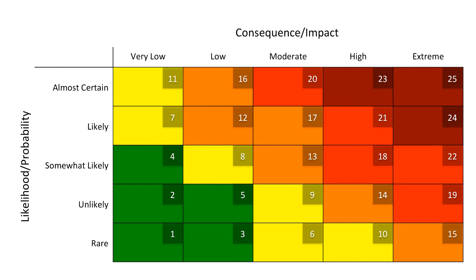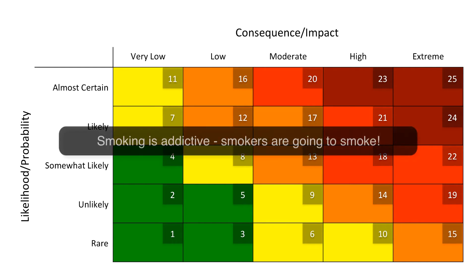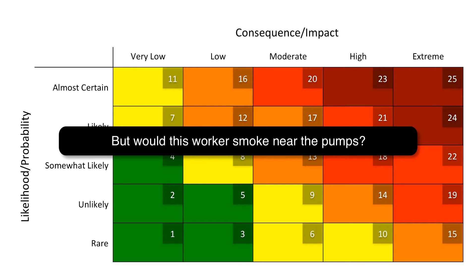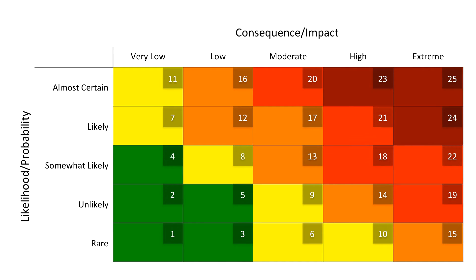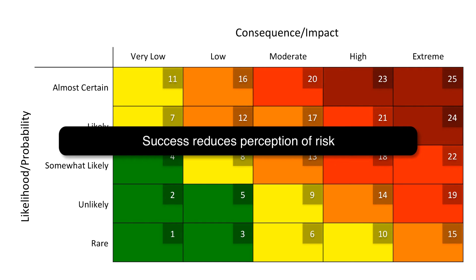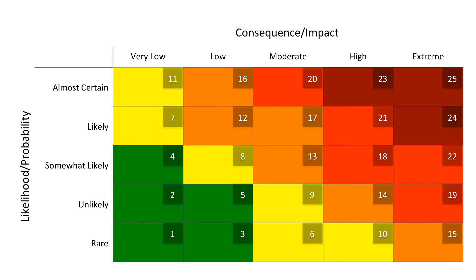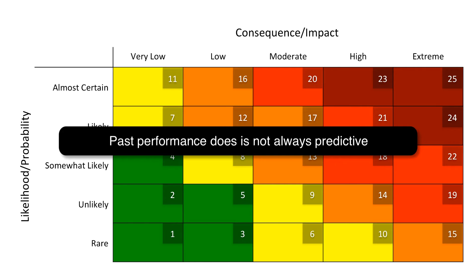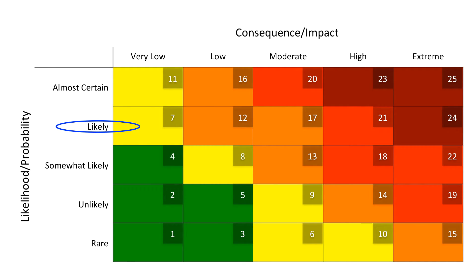Let's start by applying a risk score to the gas station event by estimating the probability of recurrence. Smoking is an addictive activity and therefore smokers smoke compulsively throughout the day. The likelihood that this worker will smoke multiple times per day is relatively high. Will he smoke near the fuel pumps, though? That's a harder question because it requires us to guess at this smoker's individual perception of risk. If he has a history of smoking near gas pumps, every successful time can actually reinforce in his mind that the activity is low risk. We tend to build up a false sense of security when nothing bad happens, because we falsely assume that nothing bad can or will happen in the future. Past performance does not predict future results, at least not always. So let's err towards the side of caution — if nothing changes, let's assume that he will likely smoke near the fuel pumps again in the future.